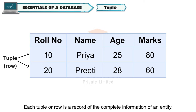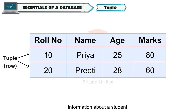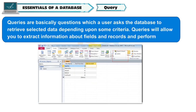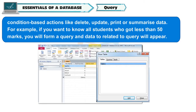Tuple — each tuple or row is a record of the complete information of an entity. For example, name, age, address and marks of a student, which will show the complete information about a student. Query — queries are basically questions which a user asks the database to retrieve selected data depending upon some criteria. Queries allow you to extract information about fields and records and perform condition-based actions like delete, update, print or summarize data. For example, if you want to know all students who got less than 50 marks, you will form a query and data related to the query will appear.